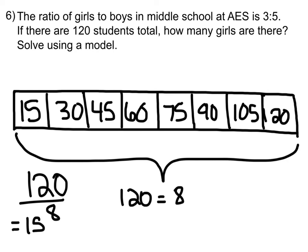But I'm not done yet. I still have to figure out how many girls there are. So it says 3 to 5, so first I have to find 3. So 1, 2, 3 — that is 3 eighths of all the students, which is equal to the girls in middle school. So that's 45 girls.